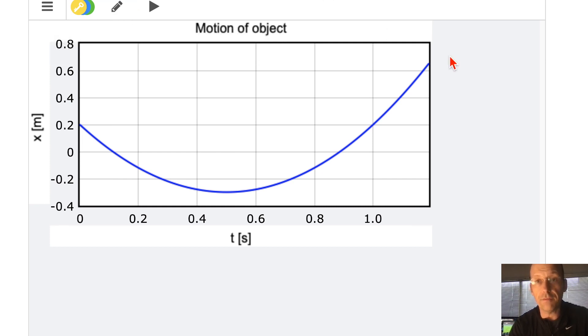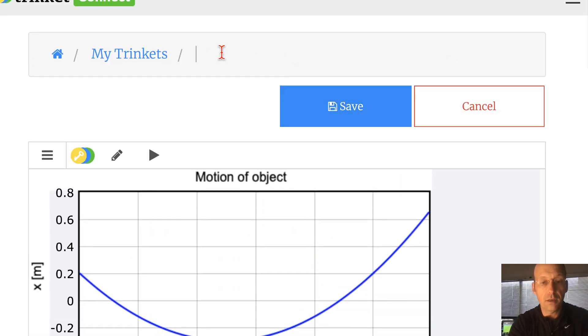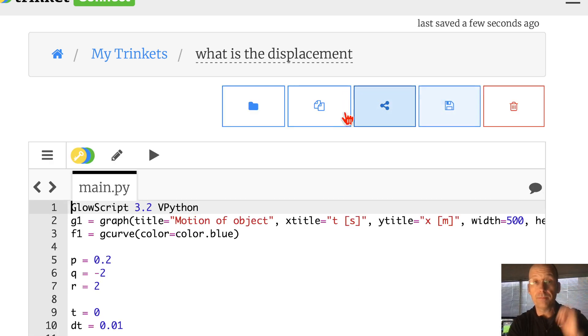So switching. Oh, I'm going to save this. What's it called? What is the displacement? And then I'll give you the link to that code, just in case you forget how to make graphs. But it's so easy to make graphs there.